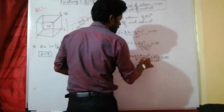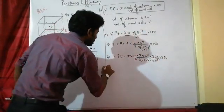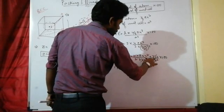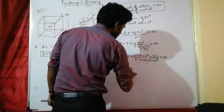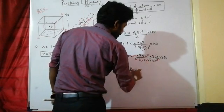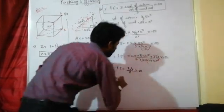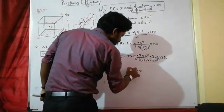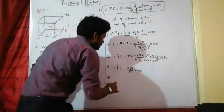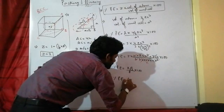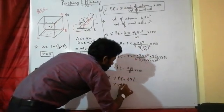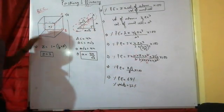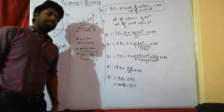Percentage packing efficiency equals π√3/8 × 100. Putting in the values of π and √3, the percentage packing efficiency comes out to approximately 68%.